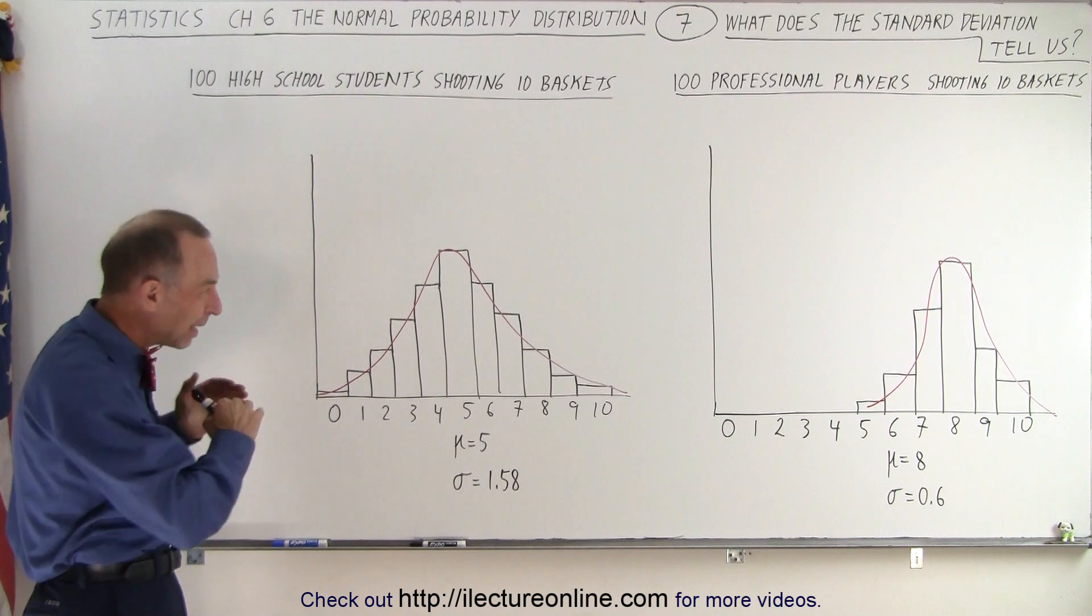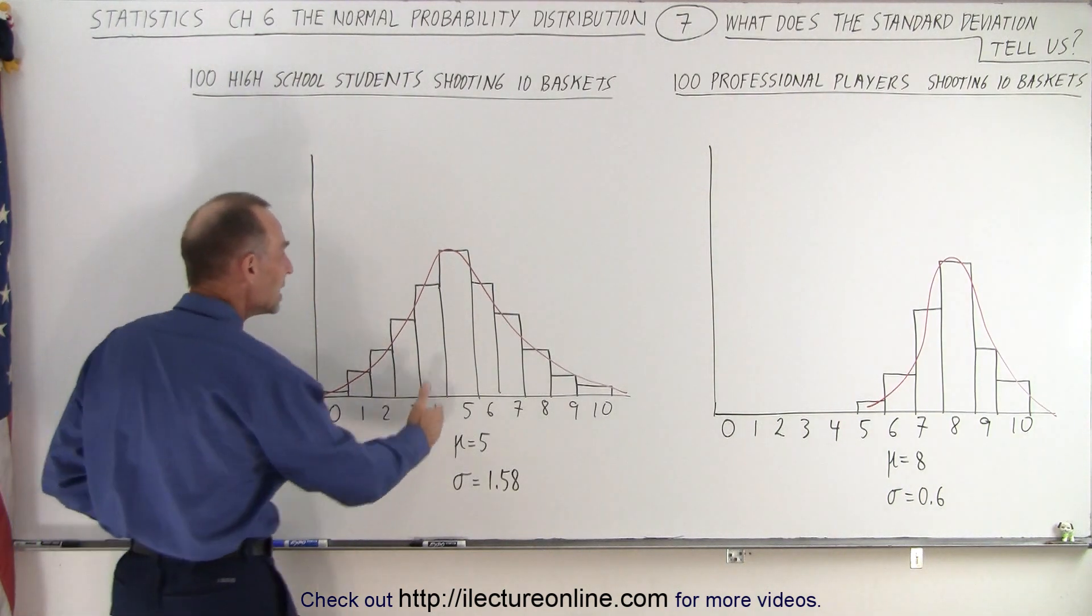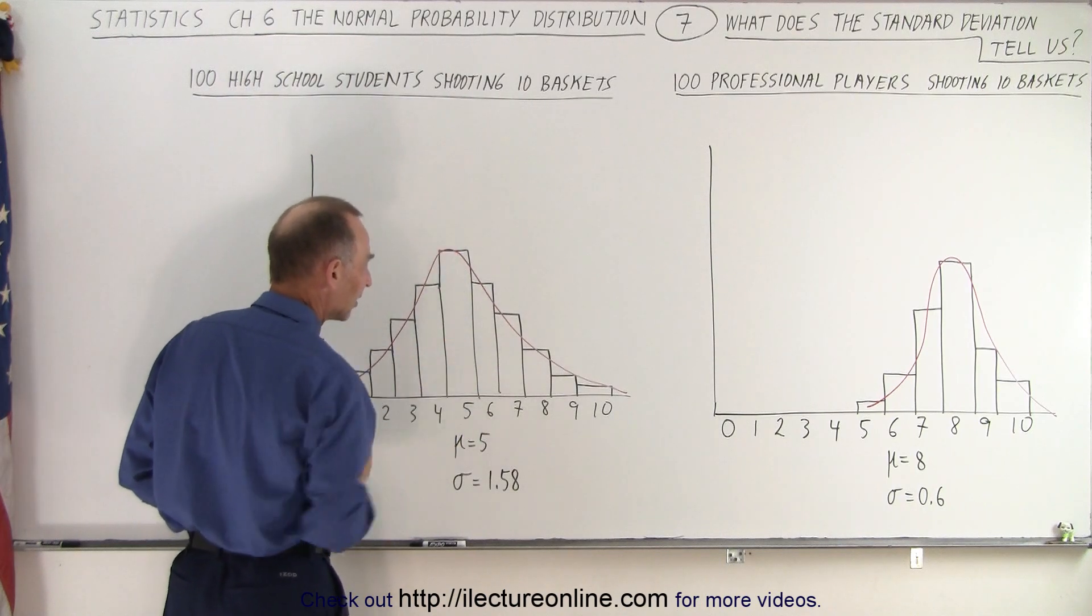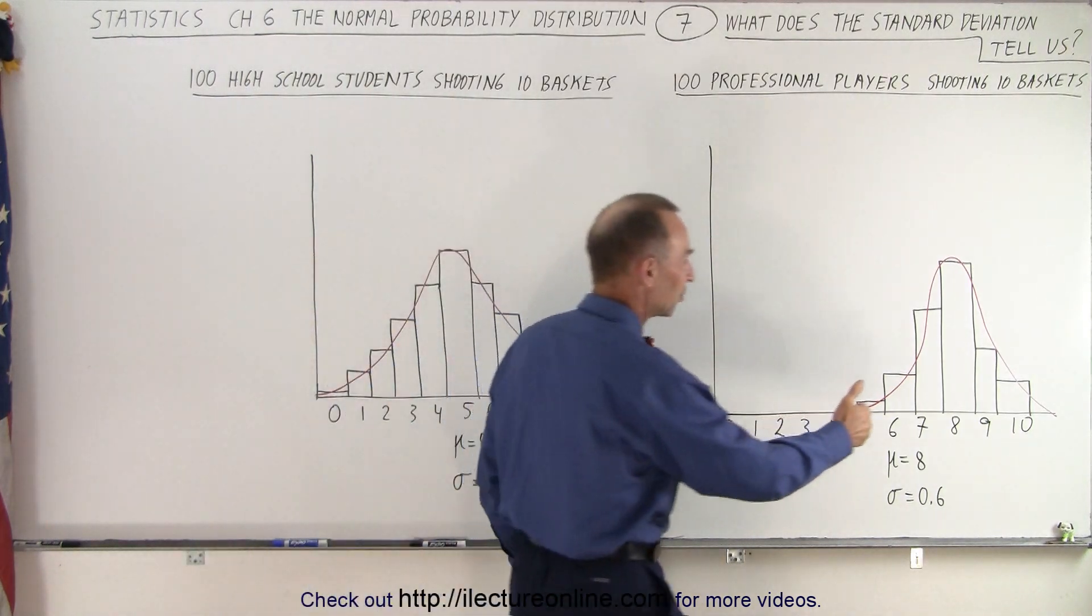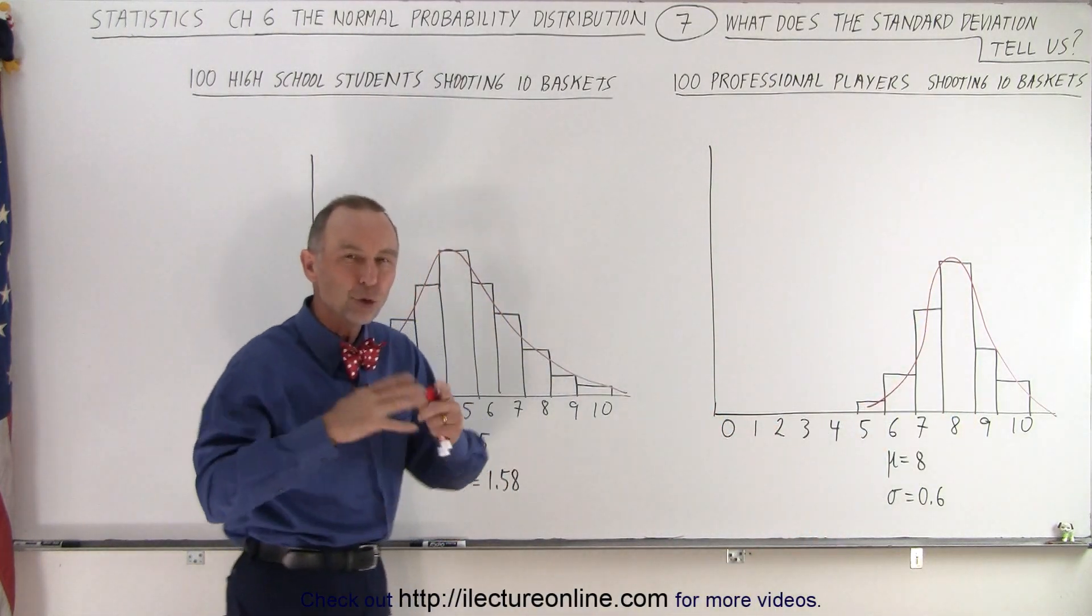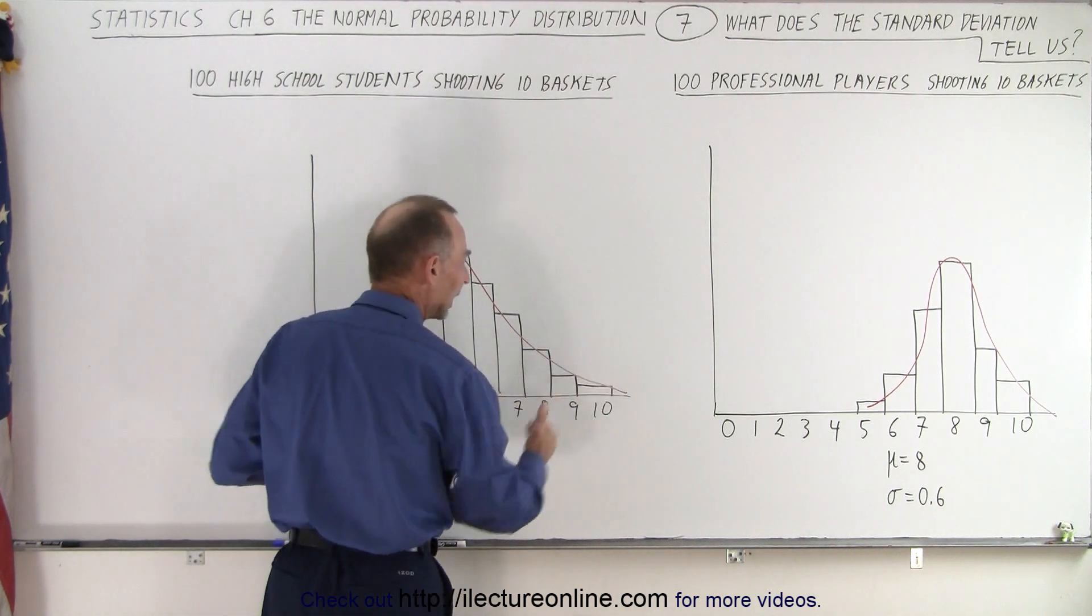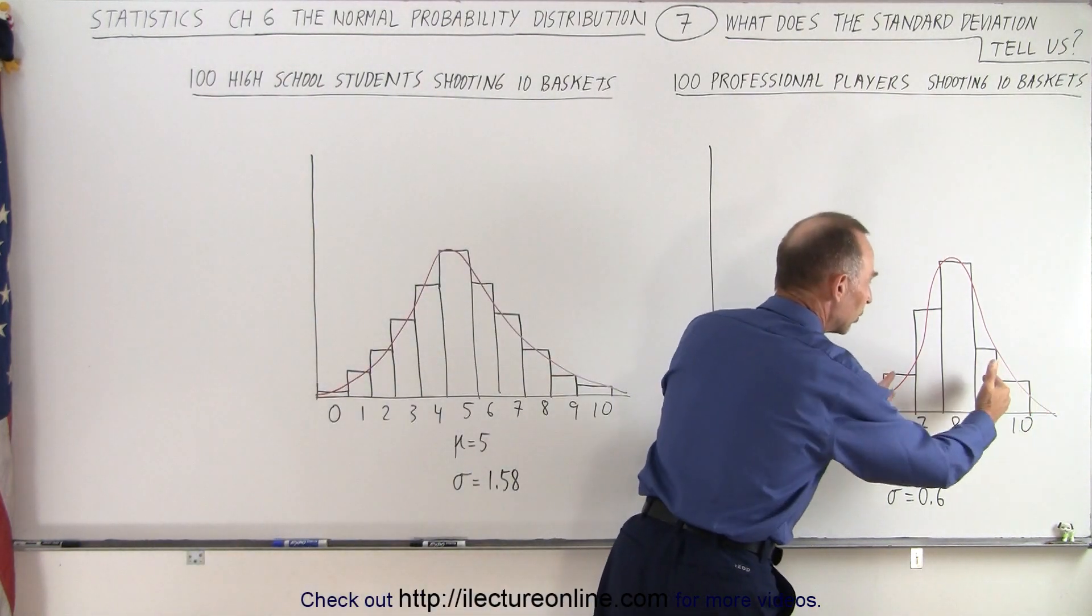Notice the difference. They both have the same general shape. We see that the mean and the highest probability pretty well coincides here. The mean and the highest probability pretty well coincides here, which makes for a normal probability distribution. But here the distribution is much wider and here the distribution is much narrower.